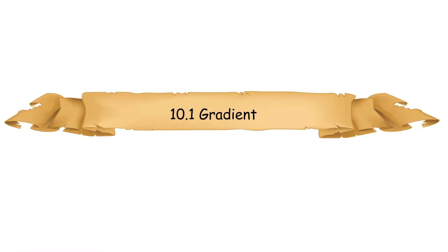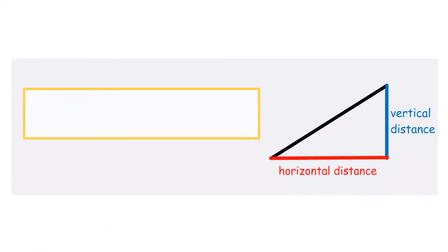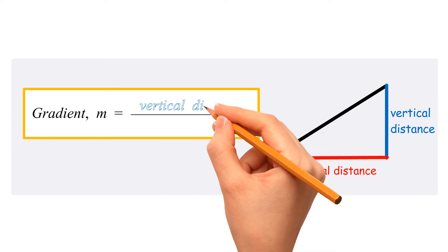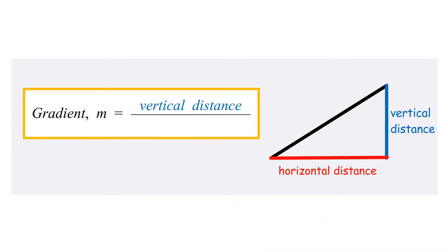10.1 Gradient. The gradient is the ratio of the vertical distance to the horizontal distance.